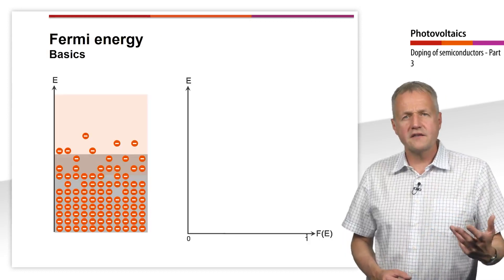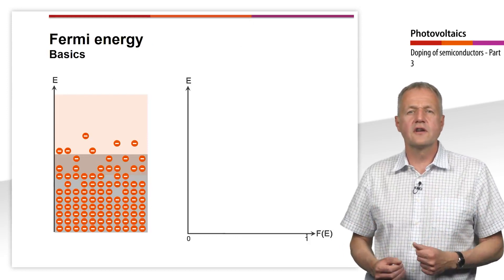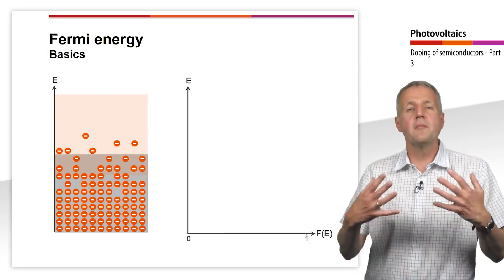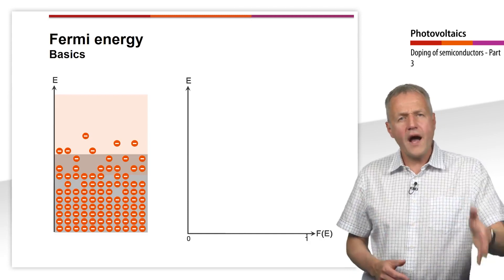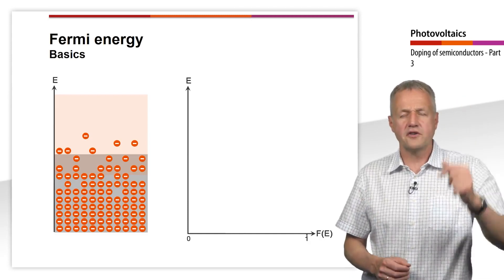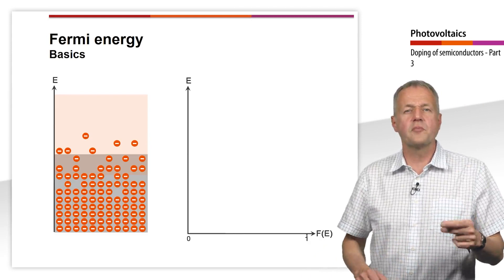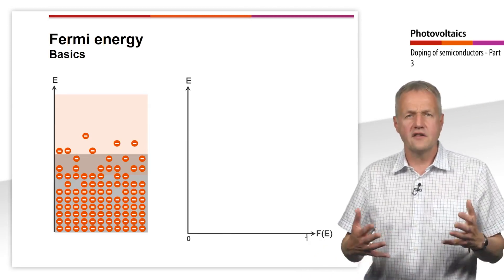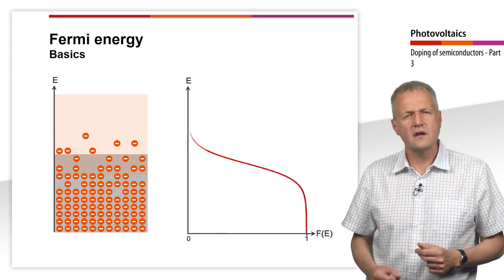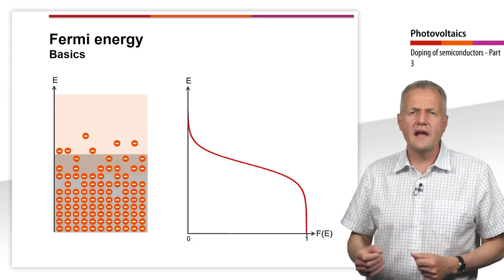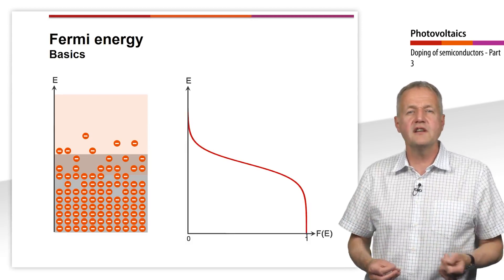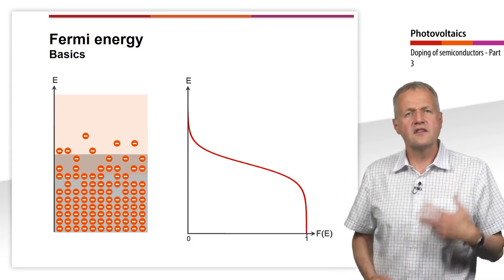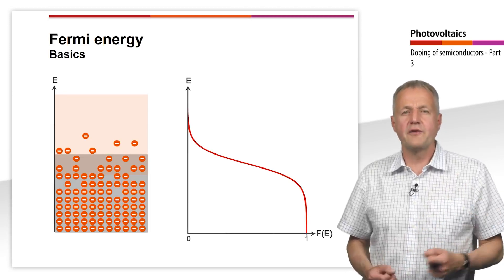For a better understanding, let us first look at the distribution of energy states in a metal. On the y-axis, the energy is plotted. On the x-axis, the probability F, with which an energy state is occupied, is plotted. The red curve describes the occupation probability as a function of the energy. This function is called the Fermi-Dirac function.